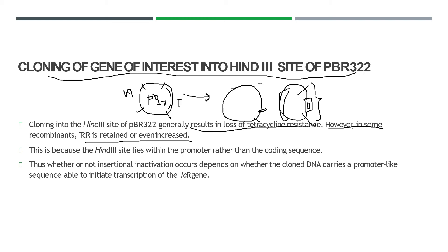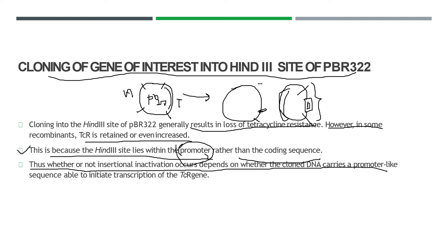The reason for this is that the HindIII site lies within the promoter region rather than the coding sequence. I recommend you remember this distinction — I will cover promoters in detail in upcoming videos. Because HindIII is in the promoter and not the coding sequence, it does not directly disrupt the coding region, which is why tetracycline resistance is inactivated in most but not all cases.